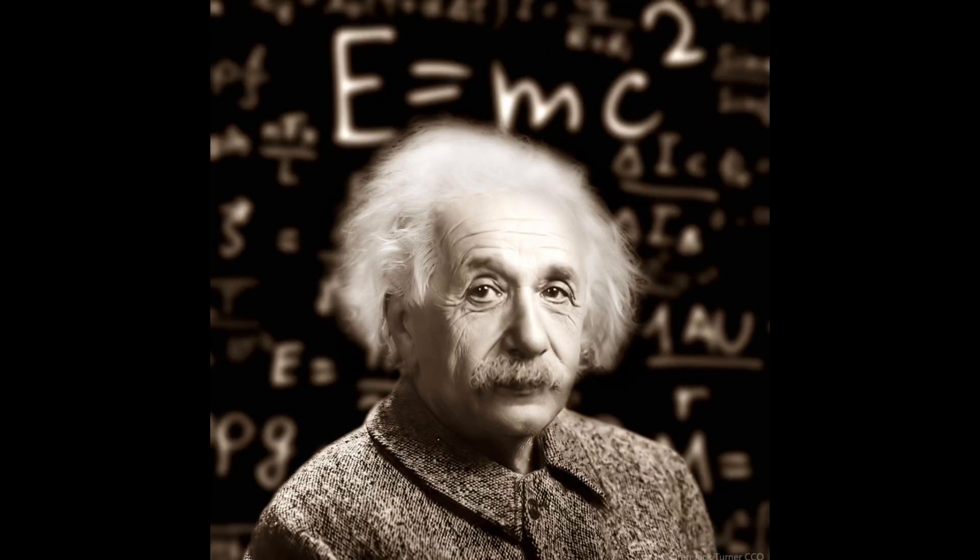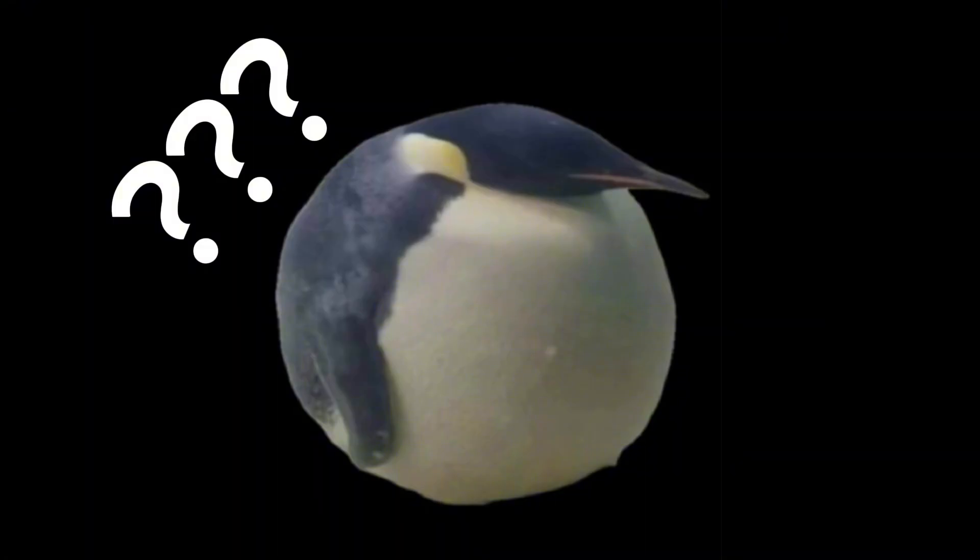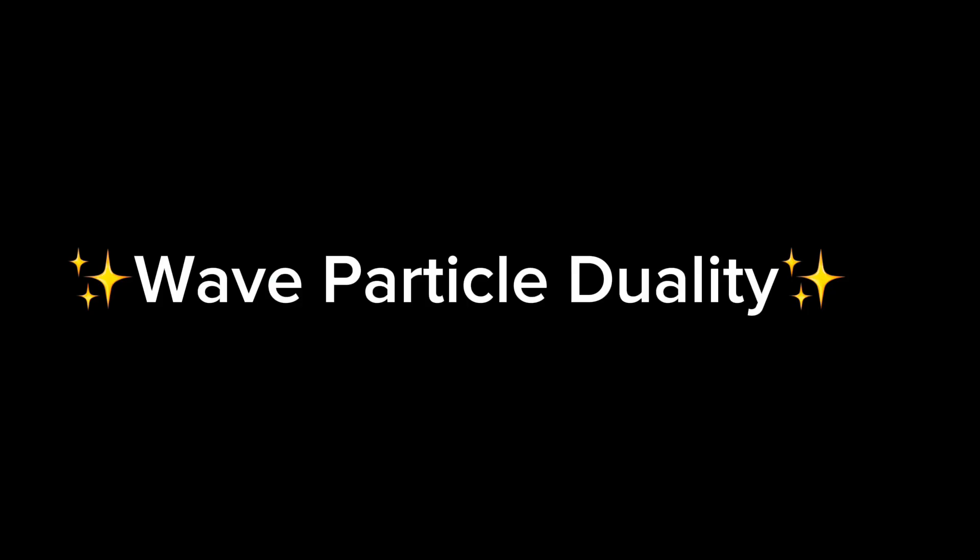The only explanation was that photons and electrons were waves, but they are also particles, right? Well, yeah, they're both. This is known as wave-particle duality. Photons and electrons are both a particle and a wave.